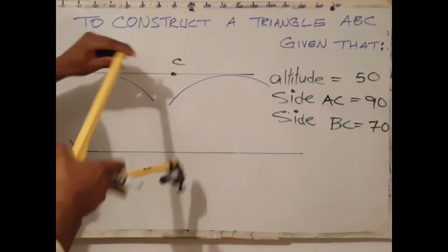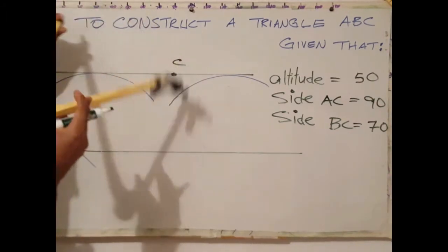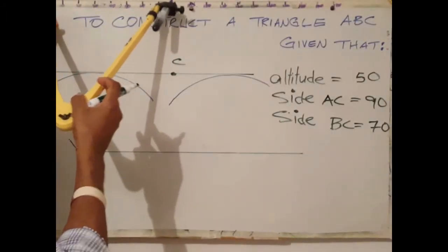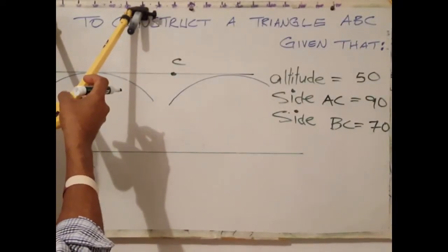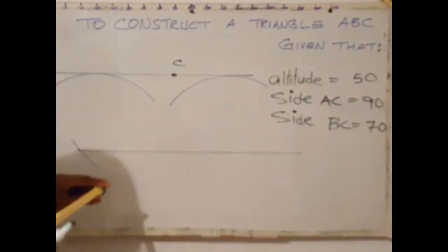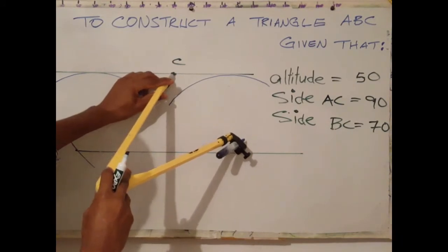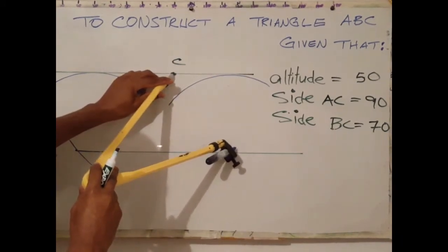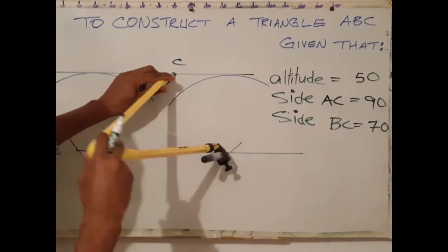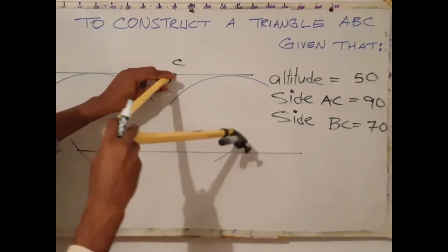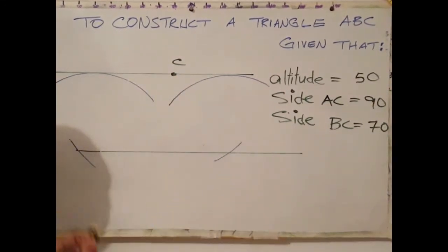With C as center, scribe an arc to cut the line. Then with C as center, scribe another arc with radius 70 millimeters.